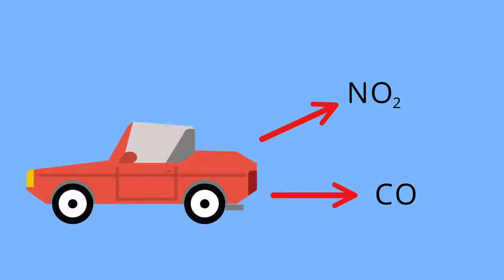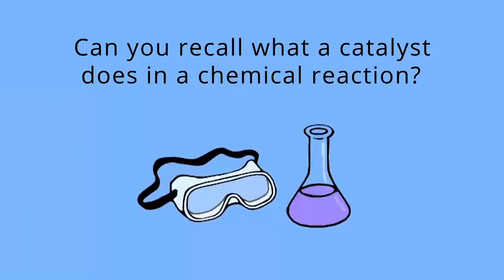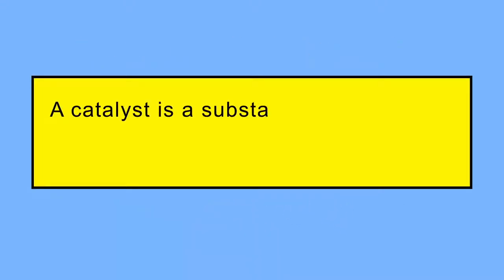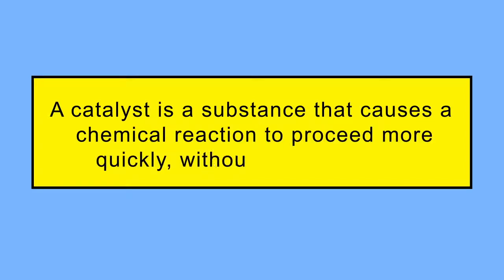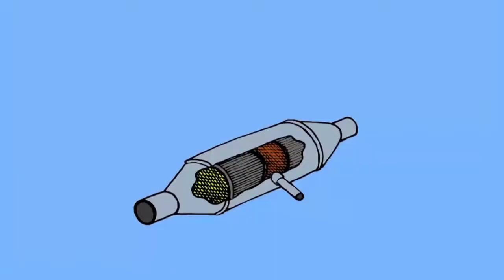Can you recall what a catalyst does in a chemical reaction? A catalyst is a substance that causes a chemical reaction to proceed more quickly without being used up. In a catalytic converter, there are two types of catalyst at work.